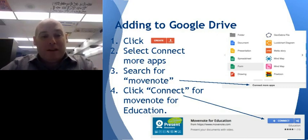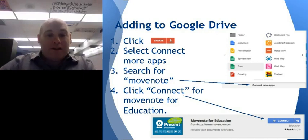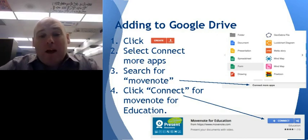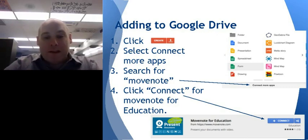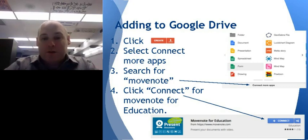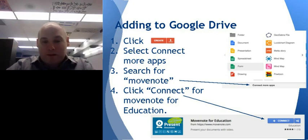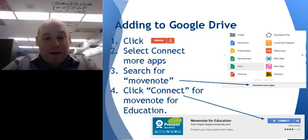You'll see the familiar Create button in the top left. Typically when it opens you'll see folder, document, presentation, spreadsheet, form, and drawing. However, at the bottom there's a box that says Connect More Apps. Google Drive is expandable — you can add additional functionality. Click on Connect More Apps and a whole bunch of options will come up. In the search box at the top right, type 'Movenote.' One of the search results will say 'Movenote for Education' — just push the Connect button.